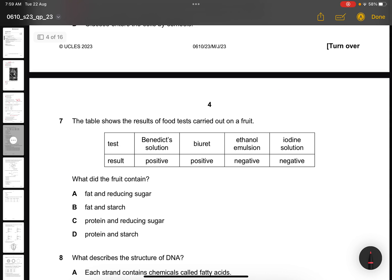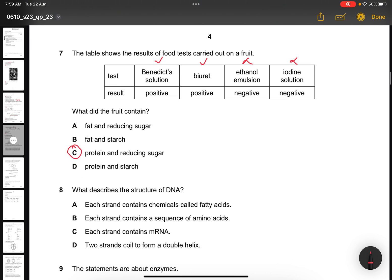Question 7. The table shows the result of food tests carried out on the fruit. What did the fruit contain? It's positive Benedict and positive Biuret, but negative ethanol and negative iodine. So Benedict solution is the test for reducing sugars and Biuret is the test for protein. So the answer is C. Question 8. What describes the structure of DNA? They want the structure, not what's inside DNA. So the answer is D, two strands coil to form a double helix, because double helix is the structure of DNA.